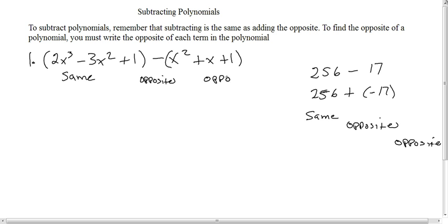Let's just go ahead and put it here, and then you'll see exactly what I'm talking about. I'm going to rewrite it: 2x³ - 3x² + 1. I'm not changing this. Please keep this in mind. But now, instead of a negative, I'm going to use a plus sign. And I'm going to change every sign inside. That's a positive x². I'm going to change it to a negative x². That's a positive x, I'm going to change it to a negative x. That's a positive 1, I'm going to change it to a negative 1.